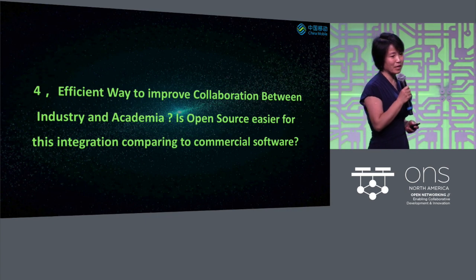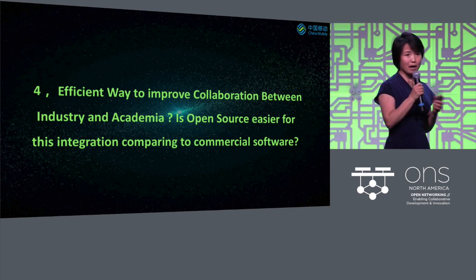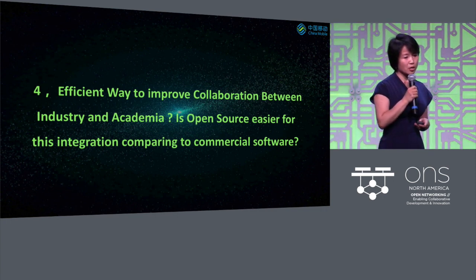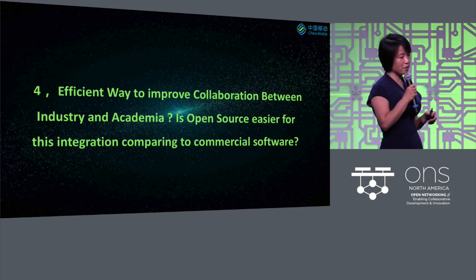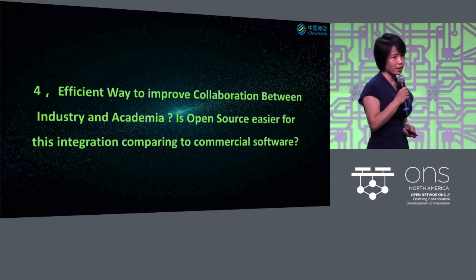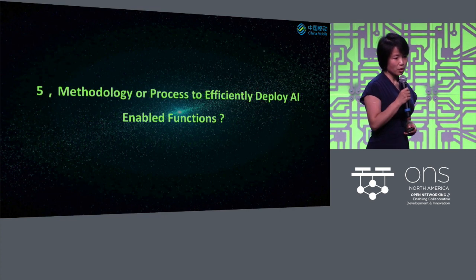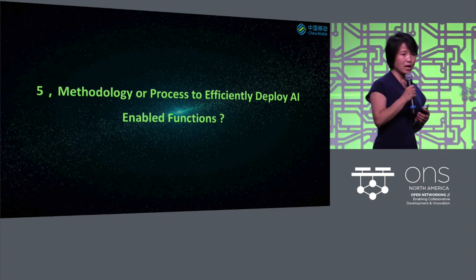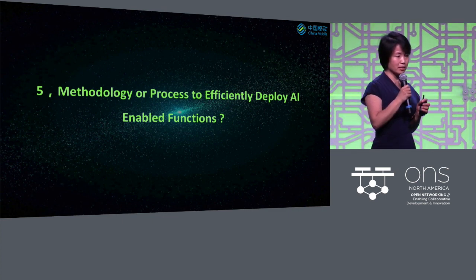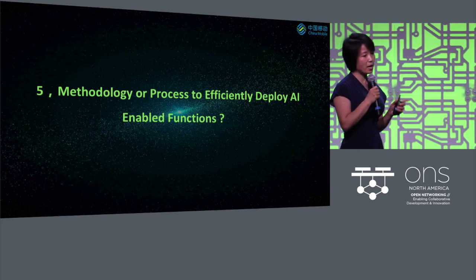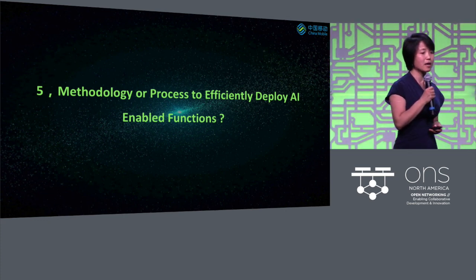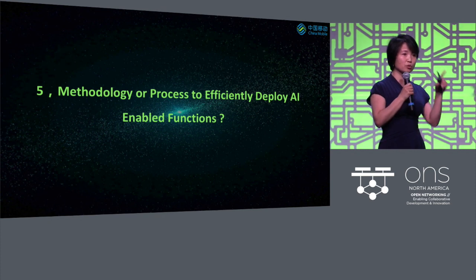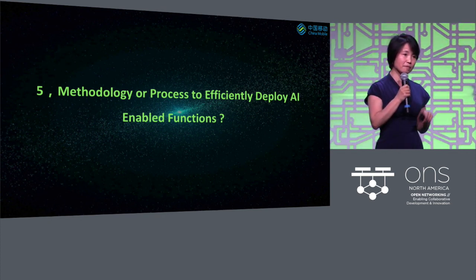We need an efficient way to improve collaboration between industry and academia. I've seen a big gap between what industry is doing and what researchers and professors are doing. Is open source an easy way for this level of integration compared to commercial software? A fifth point: AI is not only a piece of technology — it also impacts the way we run our business. Methodology and process to efficiently deploy AI-enabled functions is critical, including the closed-loop approach to make your AI system a living thing.